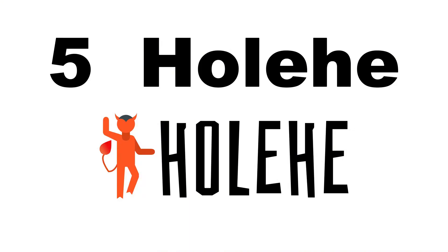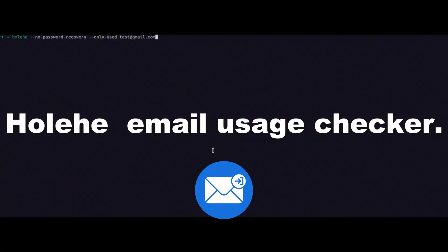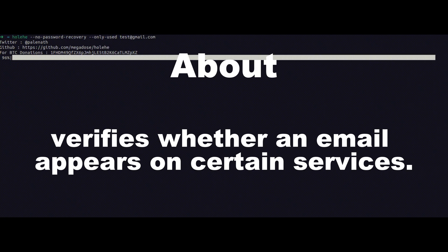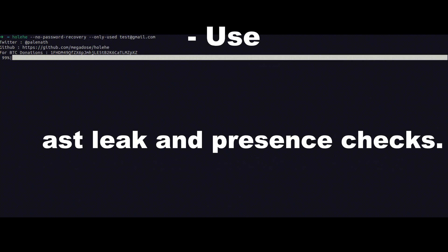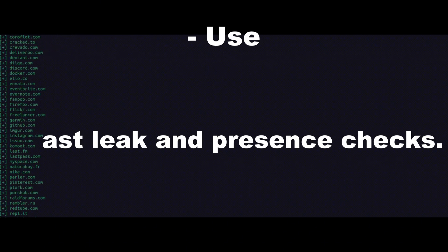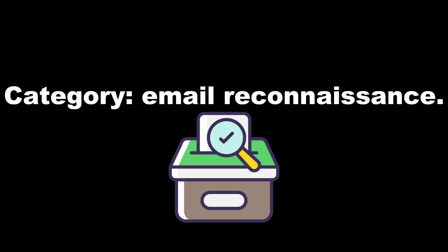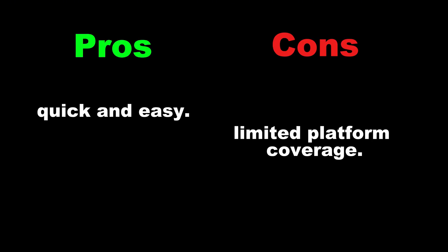Tool 5: Hole — an email usage checker. About: verifies whether an email appears on certain services. Use: fast leak and presence checks. Core work: platform presence verification. Category: email reconnaissance. Pros: quick and easy. Cons: limited platform coverage.